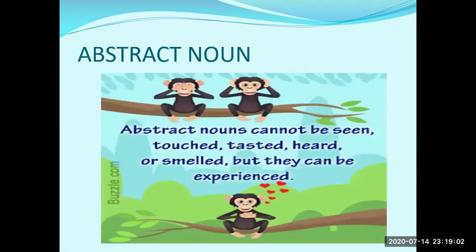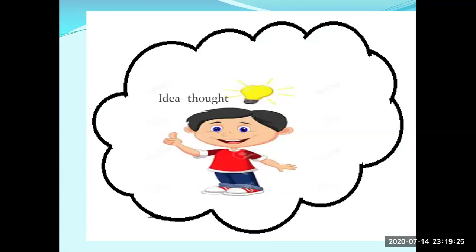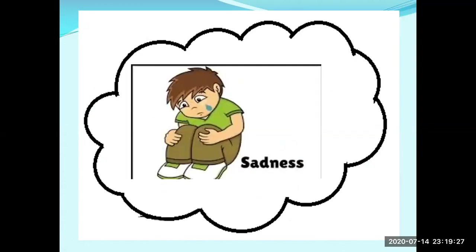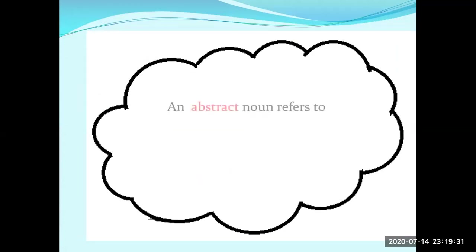Now the next noun is an abstract noun. An abstract noun is a noun that cannot be seen, touched, tasted, heard, or smelled, but it can be felt and experienced. For example, an idea is a thought and sadness is a feeling. Thus, idea and sadness are abstract nouns.